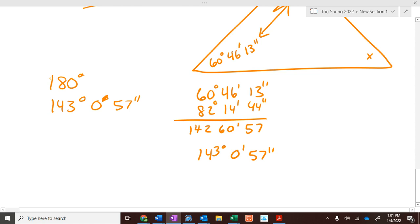So, take 60, 46, 13, and 82, 14, 44. Add them together. We get 57 here, right? 0, 60 here, right? And then 142 here. So, really, it's 143 degrees, 0 minutes, 57 seconds. So, you subtract from 180. How do we do that? We borrow. So, this is 179 degrees, which would then give 60 minutes. But we're going to write it as 59 minutes because we're going to borrow a minute and go 60 seconds right here. So, you got to borrow from the 180. 60 minus 57 is 3. 59 minus 0 is 59. 179 minus 143 is 36. So, it's 36 degrees, 59 minutes, and 3 seconds.